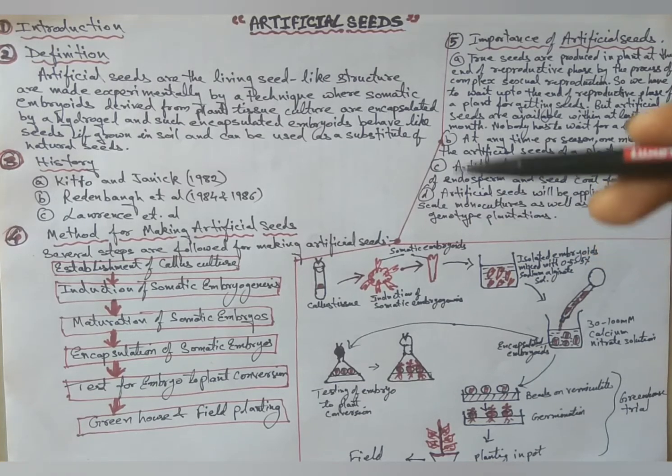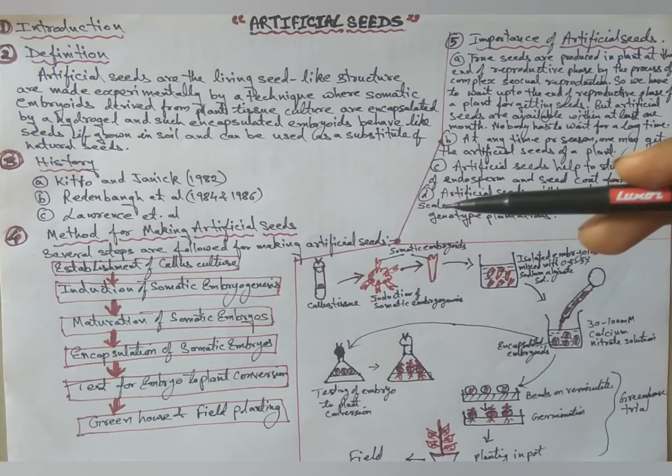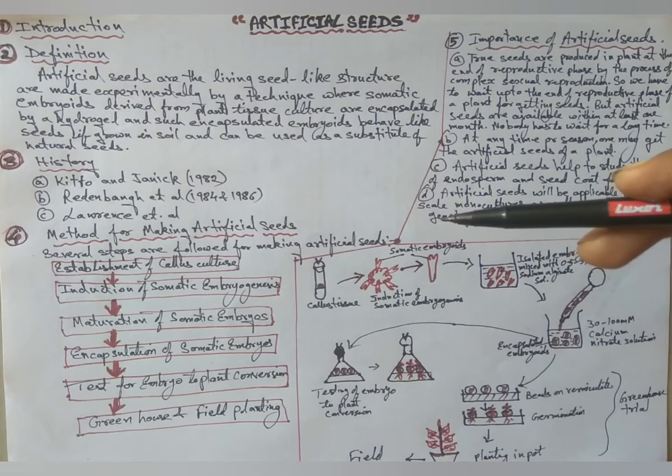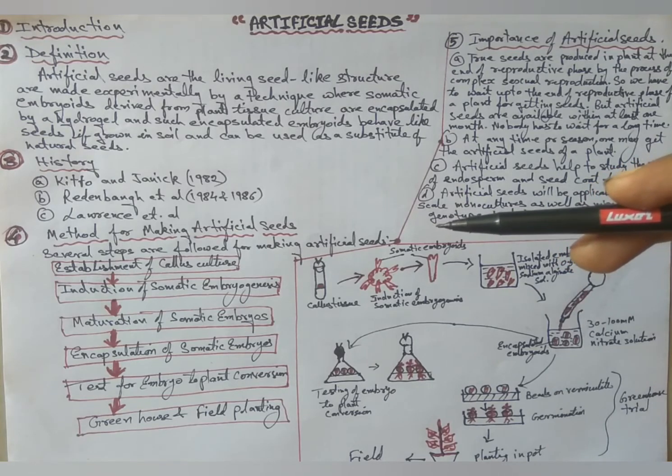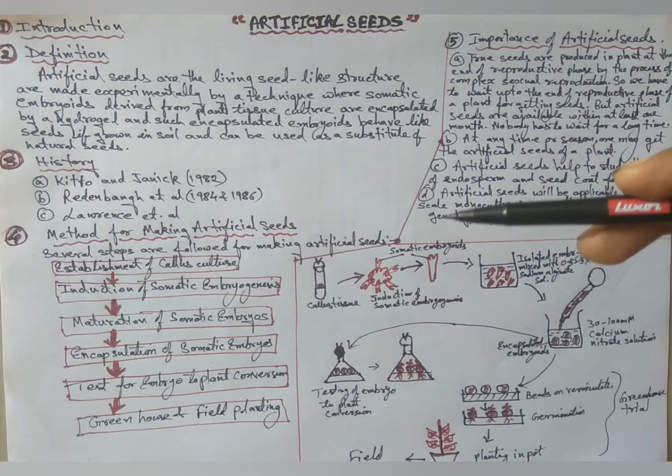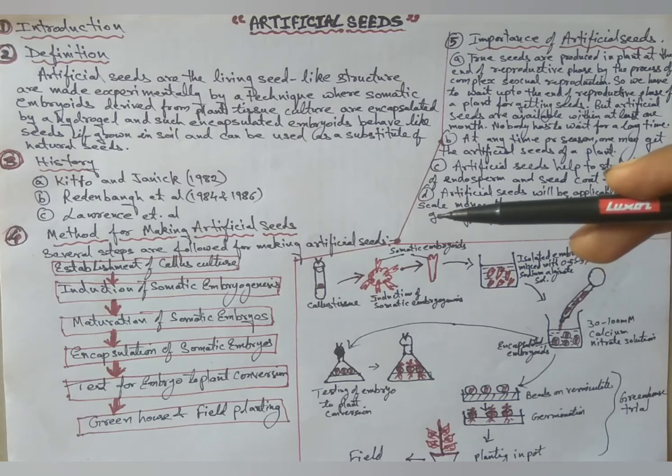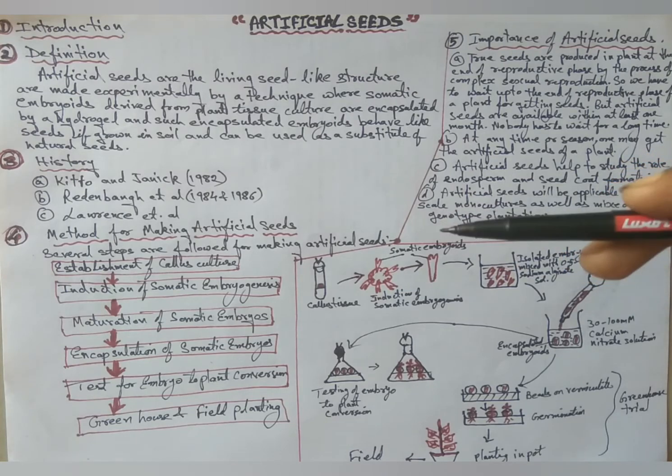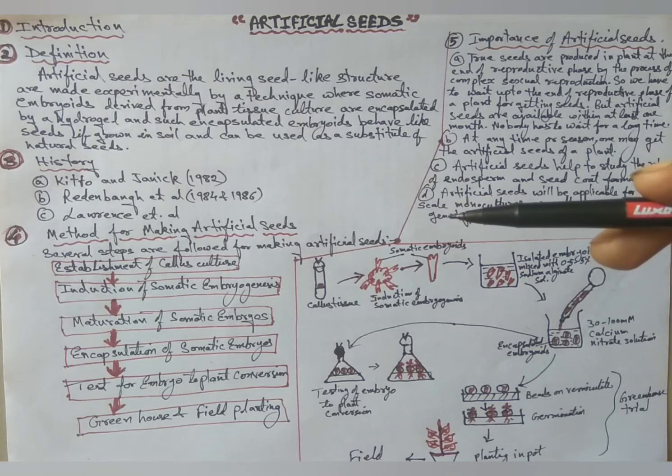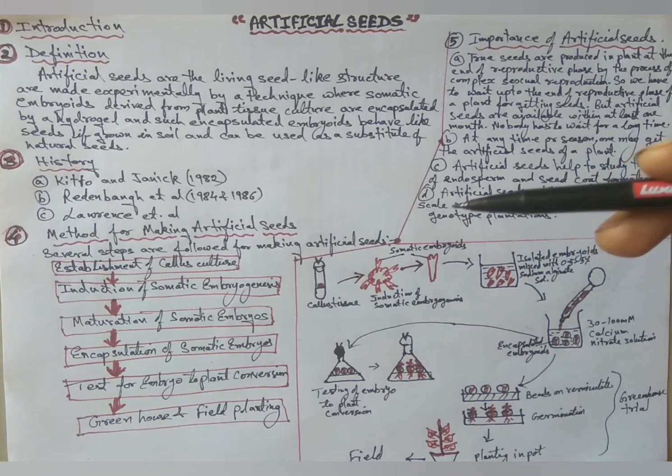The cells of which are diploid, enclosed by protective coat or coats developed from integument or integuments. In a seed, the zygotic embryo is a very important structure and it grows into seedling by seed germination.